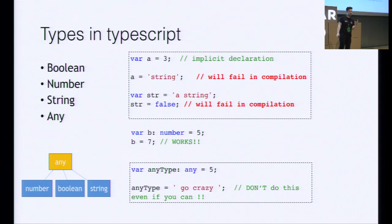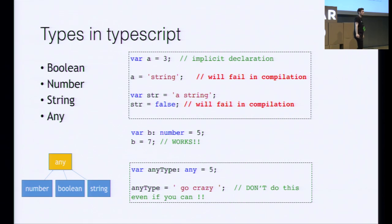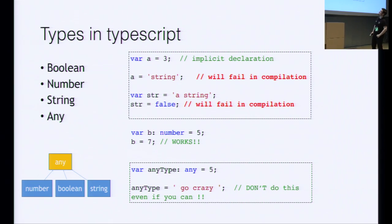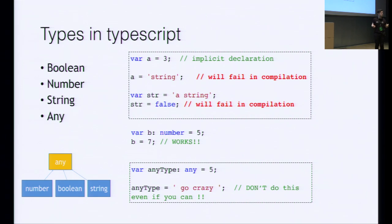Let's look at the different types in TypeScript: Boolean, number, string, and any. Any is the base type that everyone inherits from, as the bottom-left graph shows. On the right, you can see that when we assign a value to a variable, TypeScript guesses the type. If it looks like a number, it decides you are a number on initialization. On the second row, trying to assign something obviously not a number gives us a compile-time error. Similarly, var string becomes a string by TypeScript's guess, and assigning false to it fails at compile time. The middle example works because we're explicit about expecting a number, and b equals seven — two numbers, we're fine.